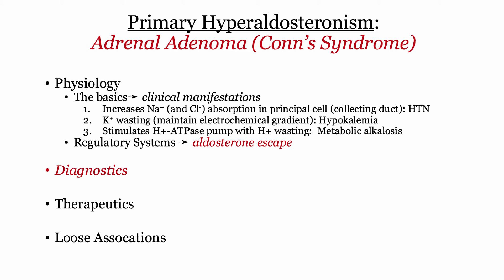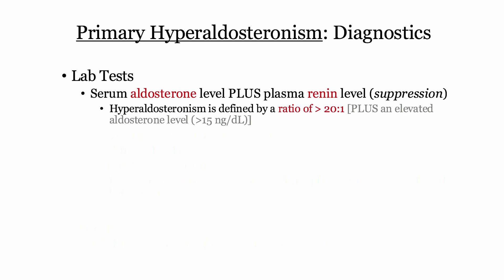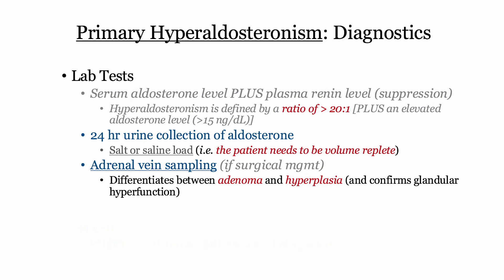In terms of diagnostics, you need a high aldosterone level and a low renin level. This is expressed by a ratio of aldosterone to renin of greater than 20 to 1. Sometimes the renin level may be very low, so you can have a high ratio even with a normal aldosterone level, so an elevated aldosterone level is also required. Other tests include a 24-hour urine collection and/or adrenal vein sampling. The urine collection is completed after the patient is loaded with either salt or saline to suppress renin, eliminating secondary hyperaldosteronism.